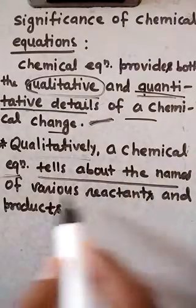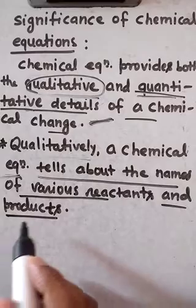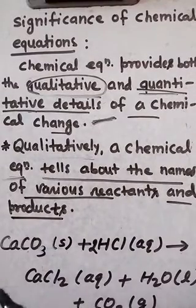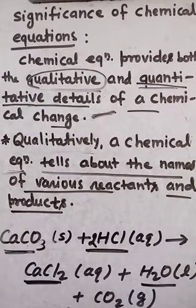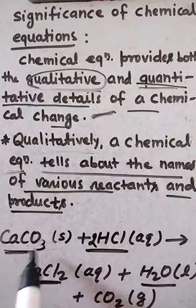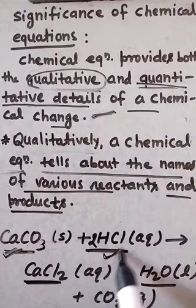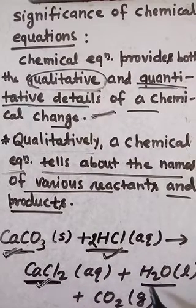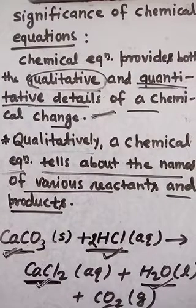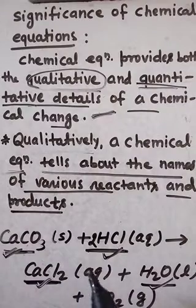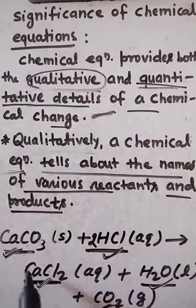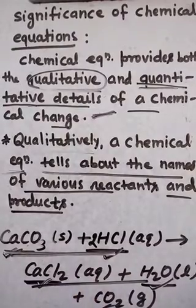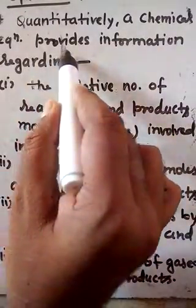Qualitatively, a chemical equation tells about the names of various reactants and products. In this equation, CaCO3 reacts with HCl to form CaCl2, H2O, and CO2. CaCO3 represents calcium carbonate, HCl represents hydrochloric acid, CaCl2 represents calcium chloride, H2O represents water, and CO2 represents carbon dioxide on both the reactants and product sides.